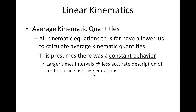All these examples give us average kinematic quantities, assuming constant behavior during the motion. In human motion, velocity and acceleration are rarely constant. Smaller time intervals allow more accurate calculations; larger intervals give a less accurate description. Motion capture software uses very small time intervals — fractions of seconds — to get precise calculations of movement.